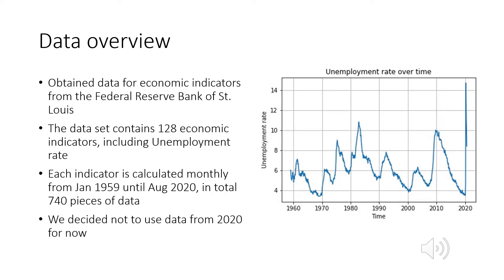Let's take a look at our data. We obtained the data from the Federal Reserve Bank of St. Louis, and it contains monthly data for 128 economic indicators, starting from January 1959 to August 2020. It includes the unemployment rate, which is our target. Here's a graph of the unemployment rate. Note that we decided not to use the data for 2020 for now, because it has an unexpected surge due to the pandemic. But we will also explore this period later on.